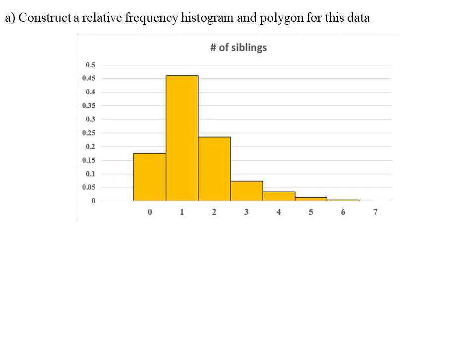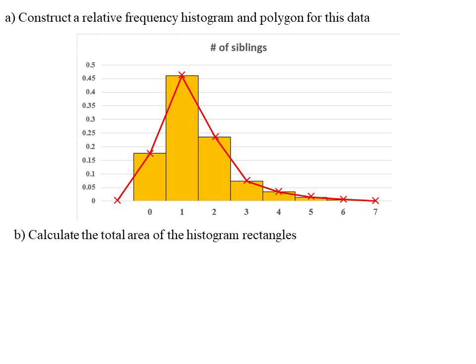There is our histogram, which is like a column graph. For the polygon, we join up to the center of the top of each column. Then we add the one before and after, which have zero frequency, so we plot them to the axis. Join them up, and there's our polygon.